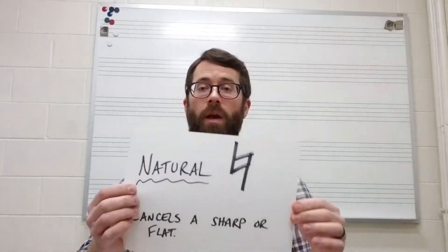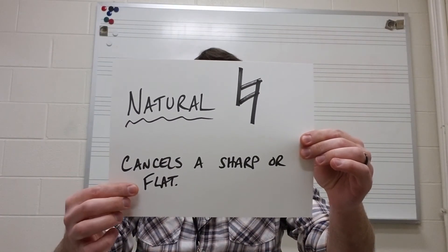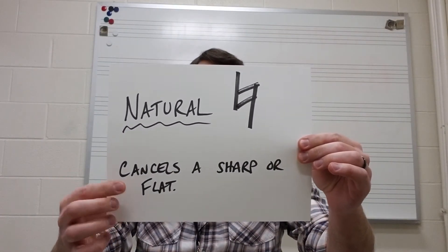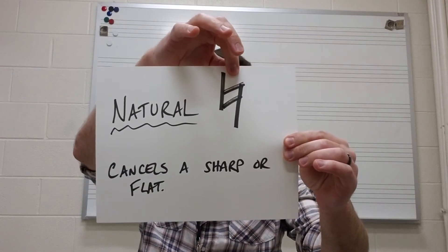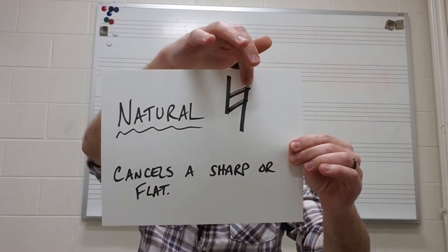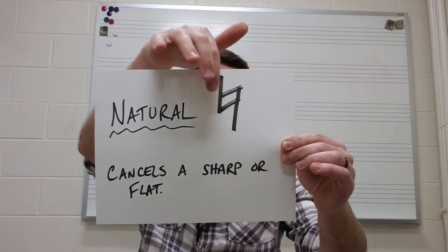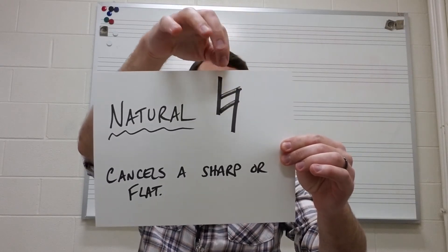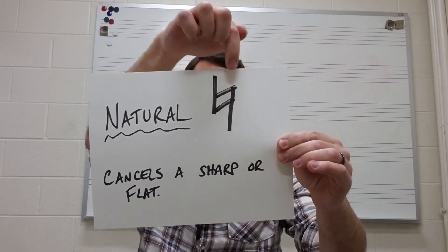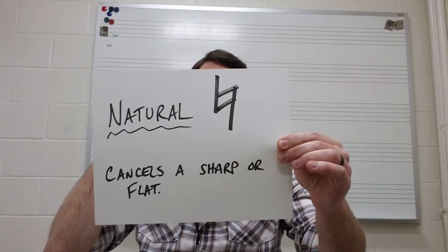The last symbol that I'm going to talk about is a natural. A natural simply cancels a sharp or a flat. The symbol looks pretty similar to a sharp, but it's missing some of the arms on it. So just be very careful when you're looking for this — I tell my students it's like an L and then a 7.